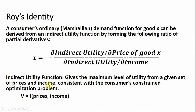To recall, an indirect utility function gives us the maximum level of utility from a given set of prices and income, which is consistent with the consumer's constrained optimization problem. So the indirect utility function v is just a function of prices and income, whereas a normal or direct utility function is a function of units of good x and good y.